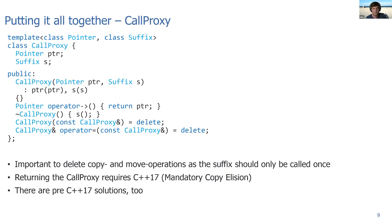How does the CallProxy class look like? It's templated on the pointer and the suffix, and stores the pointer ptr and the suffix S. We construct it from the pointer ptr and the suffix S. Now we again overload the operator arrow to return the pointer. And we have a user-provided destructor where we call the suffix action. So when the temporary CallProxy object gets destroyed, the suffix action gets executed. We delete the copy constructor, which also automatically deletes the move operations. This is important because you want your CallProxy object to only be called once. You want the suffix action to be only executed once. If you would copy it, the destructor would be called twice, once for the original object and once for the copy.